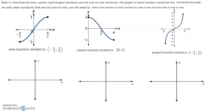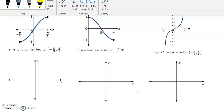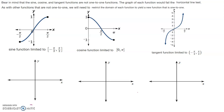Let's talk about how these restrictions apply to our quadrants when we're looking at the sine function. Notice that we were limited to negative pi over 2 to positive pi over 2. On our axes we can go ahead and label those two pieces: here's our negative pi over 2 and our positive pi over 2. So we're going to be working in either quadrant 1 or quadrant 4. Keep in mind that when we're working with our sine function, sine is positive in quadrant 1 and sine is negative in quadrant 4.